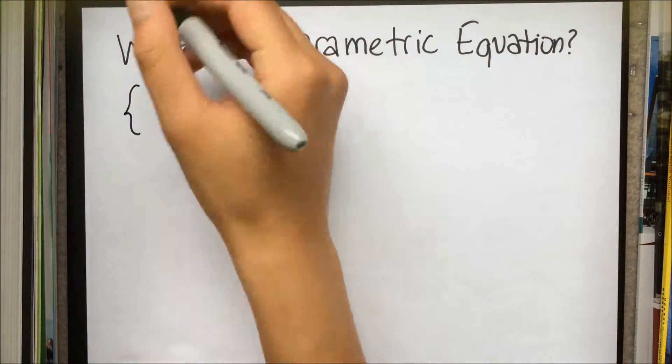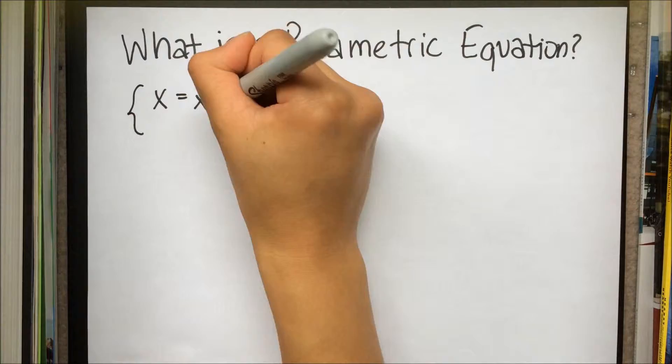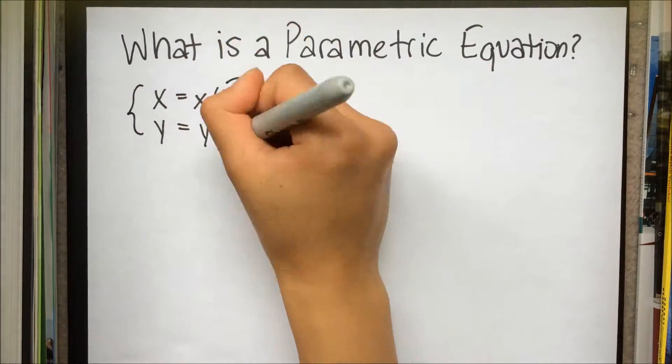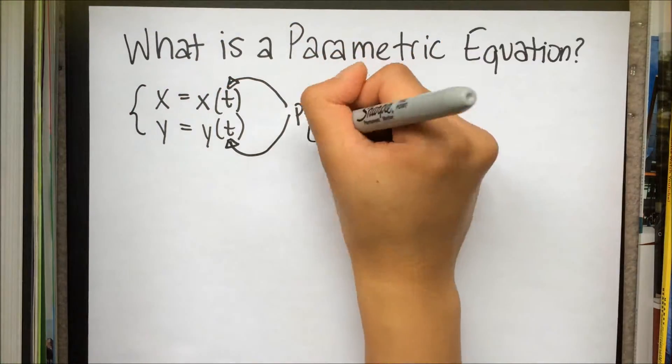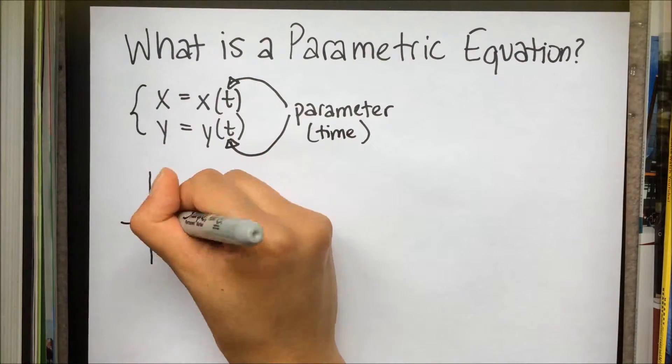Together, the equations produce an x and y coordinate that is plotted on a graph. X and y are both in terms of t. This is the parameter, which is usually represented for time.